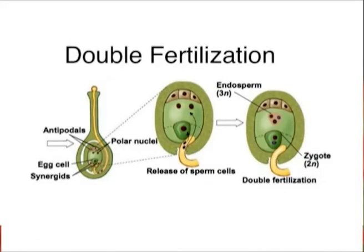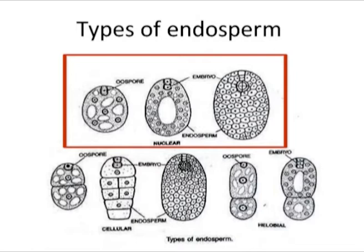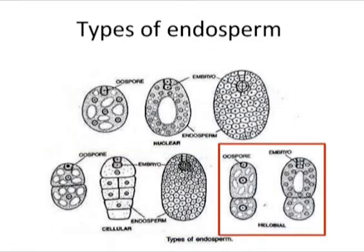Development of the endosperm starts with the fusion of one male nucleus with two female nuclei in the embryo sac after fertilization. The first cell formed is a triploid cell — the endosperm mother cell. Three types of endosperms are distinguished on the basis of further divisions of this cell: nuclear endosperm, cellular endosperm, and helobial endosperm.